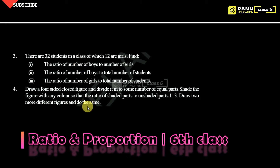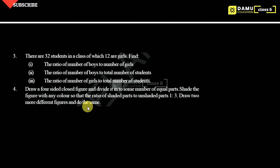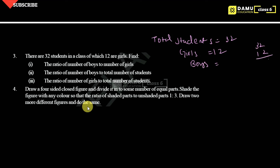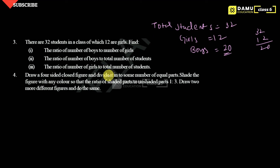Next question: there are 32 students in a class, of which 12 are girls. Total students are 32, girls are 12, so boys equal 32 minus 12, which gives 20 boys. Find the ratio of the number of boys to the number of girls.